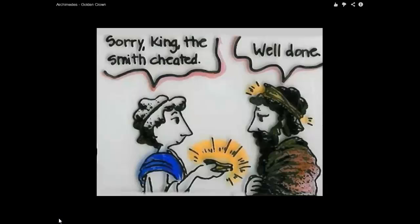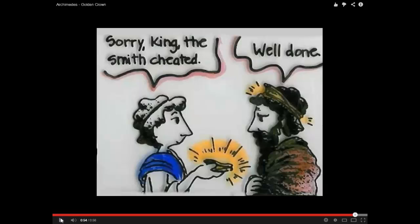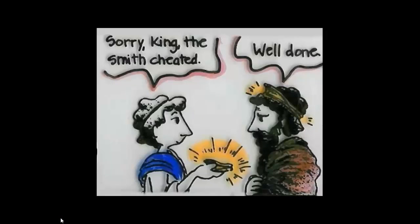That's how Archimedes figured out how to find the volume of the crown. He found out that the goldsmith had cheated the king. Back then, when you cheat the king out of money, they cut your head off — so they executed the guy. And that's the story of Archimedes and Eureka.